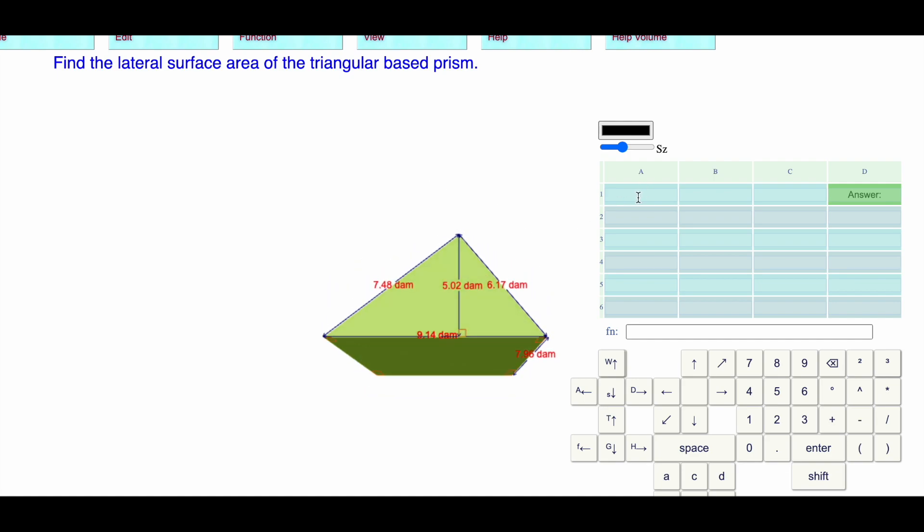For this triangular base prism, here's the triangle. I need to know the base of the triangle, I need to know side one, I need to know side two of the triangle, then I need to know the height of the prism and the perimeter of the base to figure out the lateral surface area, which is perimeter of the base times the height.